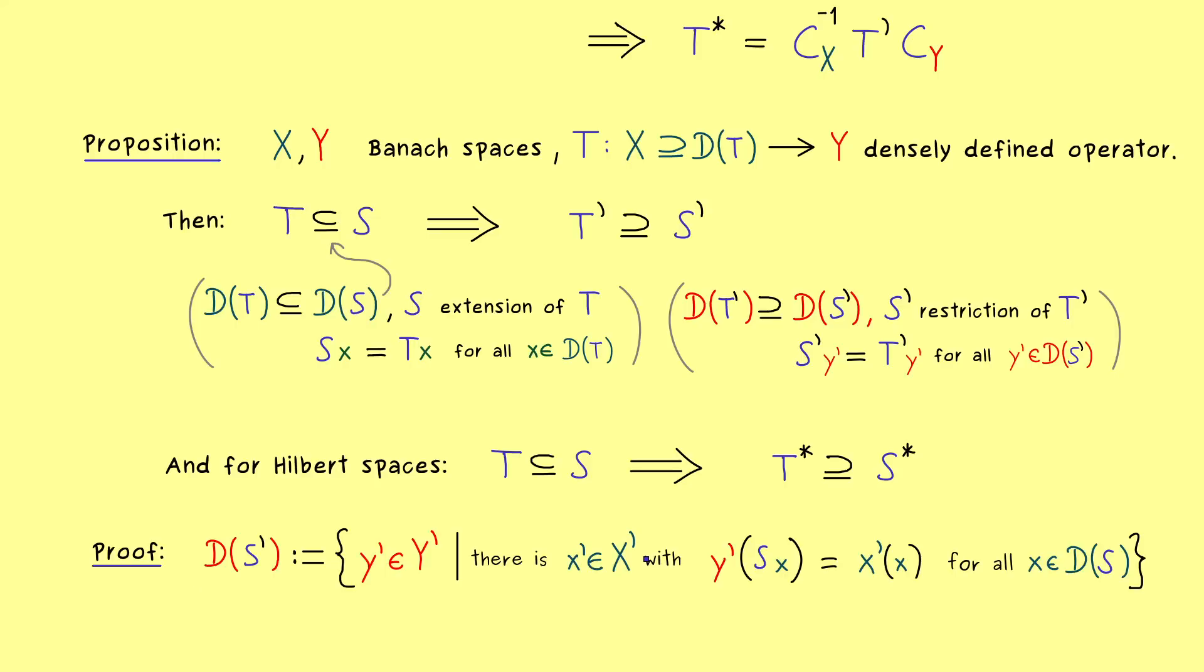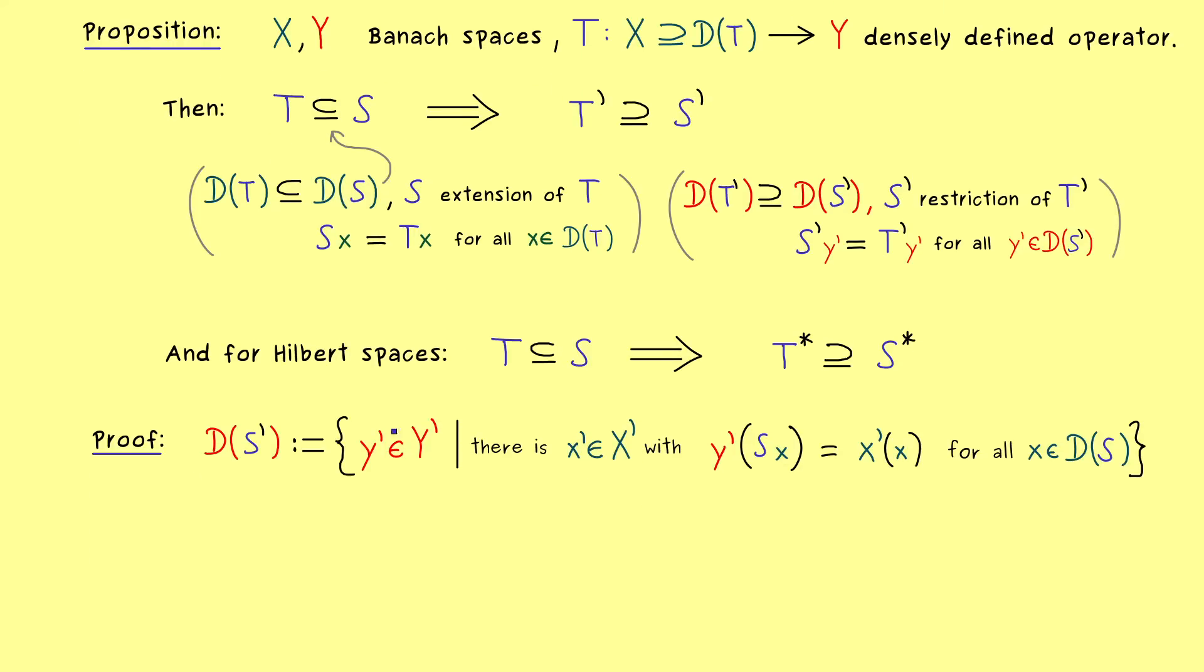So please recall this from the last video, this one here is the domain of S'. And the key thing is that we have to satisfy this equation here for all x in the domain of S. This means, this equation is definitely also satisfied if we make the domain smaller, so if we choose the domain of T. Hence, in the second line here we have to check less vectors and therefore the whole set here can only get bigger. Or to say it more precisely, it cannot get smaller.